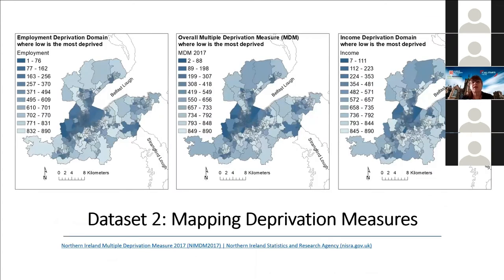The second dataset is deprivation measures for Northern Ireland, provided by the Northern Ireland Statistics and Research Agency. These are divided into 890 units where a score of one is the most deprived and 890 is the least deprived. The darkest areas on the maps show West Belfast and North Belfast as among the most deprived. The overall deprivation index is broken into six domains, with employment and income each making up 25% of the overall measure.